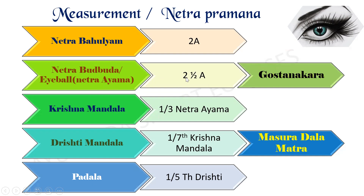The Netra Budbuda is Gostanakara. Krishna Mandala is 1/3rd of Netra Ayama. Drishti Mandala is 1/7th of Krishna Mandala, and it is Masuradhana Matra in size.